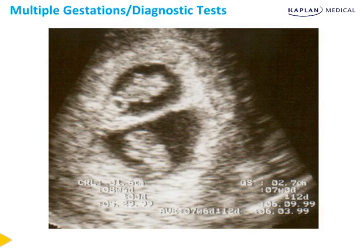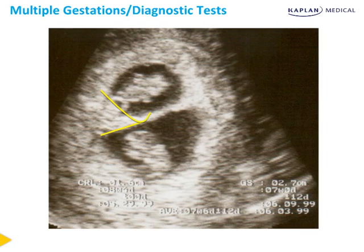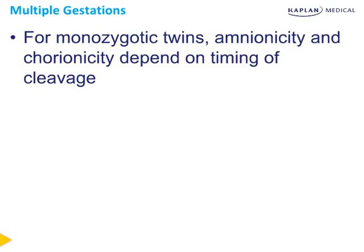Multiple gestations are ultimately diagnosed by ultrasound. An ultrasound scan of a twin pregnancy at eight weeks' gestation shows the lambda sign — a triangular peak of chorion extending from the placenta to the inter-twin membrane. This lambda sign is seen in a dichorionic-diamniotic twin pregnancy. The concept of amnionicity and chorionicity is very important for the management of multiple gestation pregnancies. In monozygotic twins, amnionicity and chorionicity ultimately depend on the timing of cleavage.